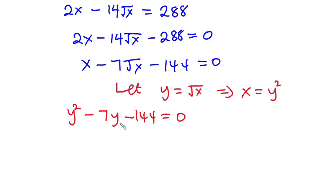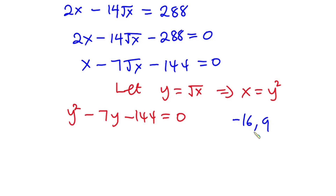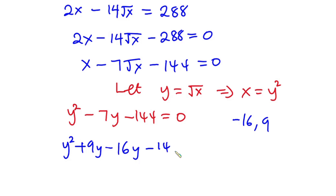At this point we look for two values that when multiplied give negative 144, but when summed give negative 7. The numbers are negative 16 and positive 9. So the equation becomes y squared plus 9y minus 16y minus 144 equals zero.